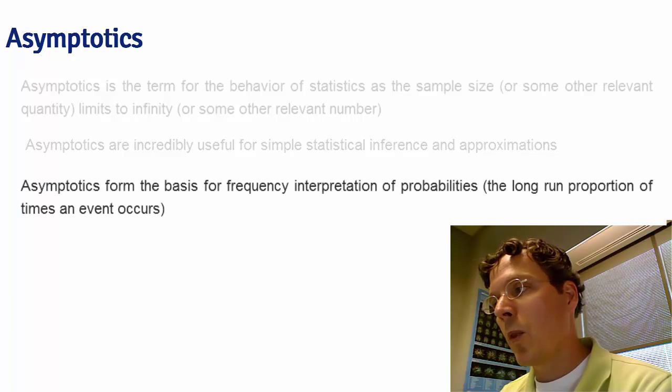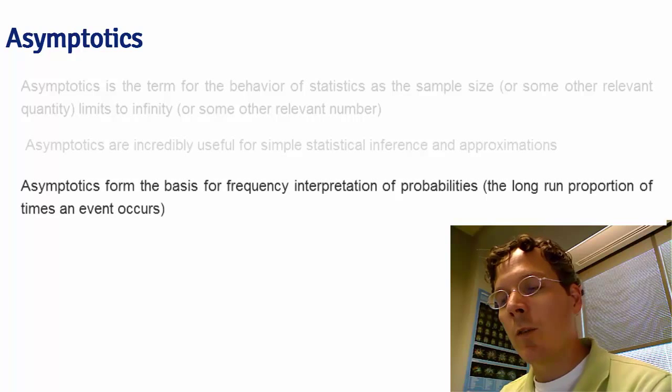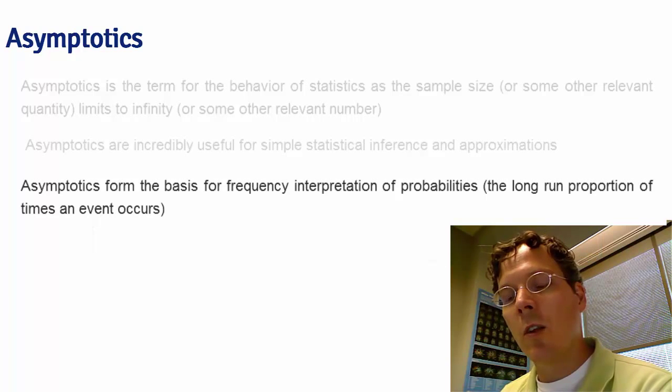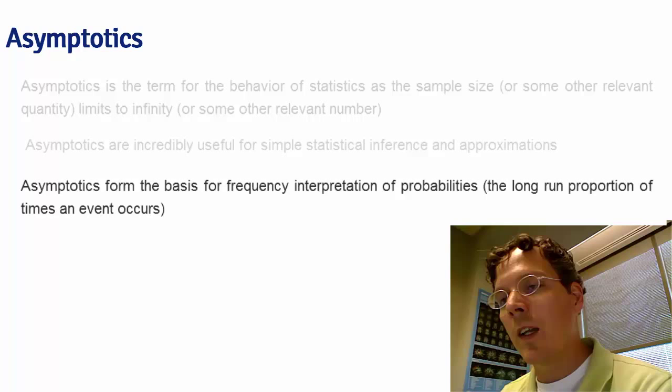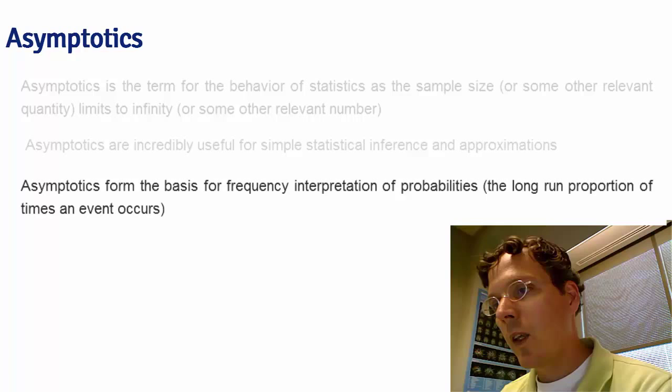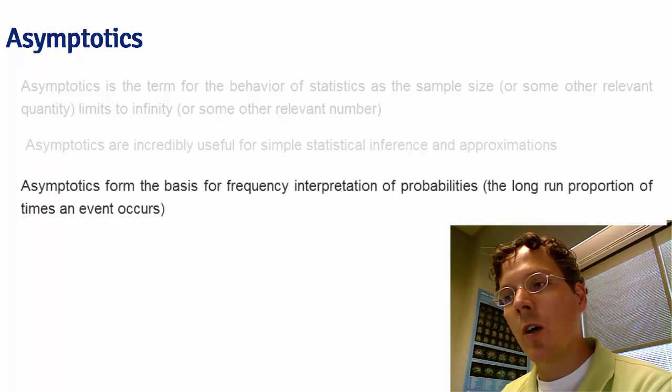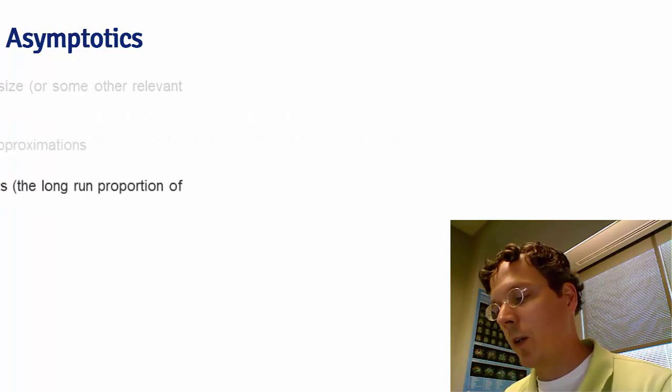Asymptotics also form the basis for frequency interpretation of probabilities. For example, everyone kind of intuitively knows that if you flip a coin and take the proportion of heads, that should limit to 0.5 for a fair coin. That property is the so-called law of large numbers that we'll explore here in a minute.